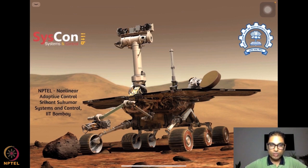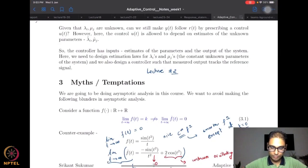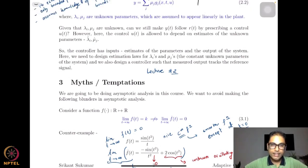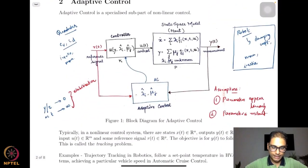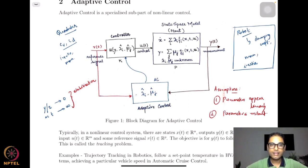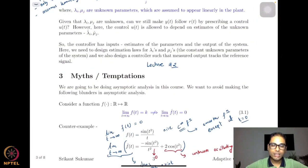Without further ado, we go into our lectures. Until last time, we had looked at an introduction to adaptive control — the building blocks: a state space model block, a controller block, and in addition, an adaptive control block. The purpose of this adaptive control block was to estimate the unknown parameters in the system.